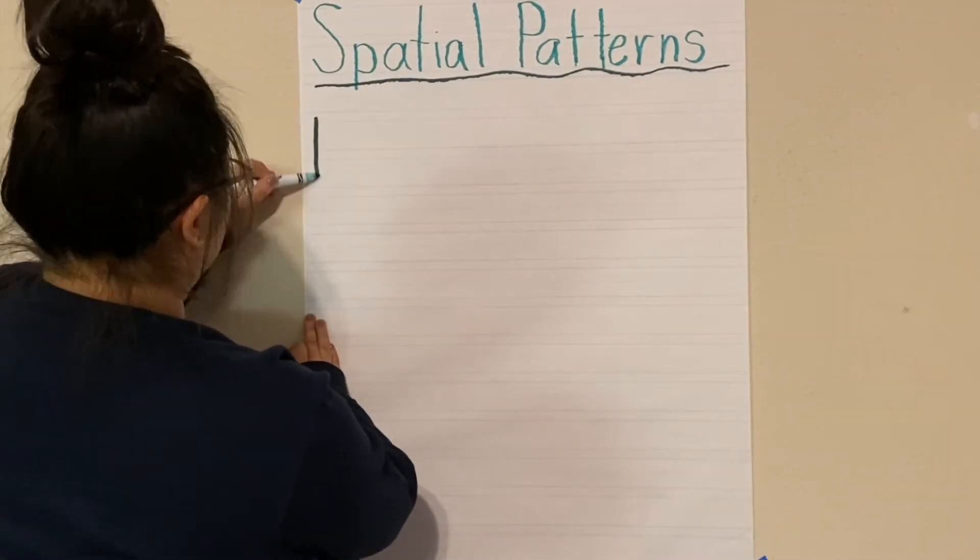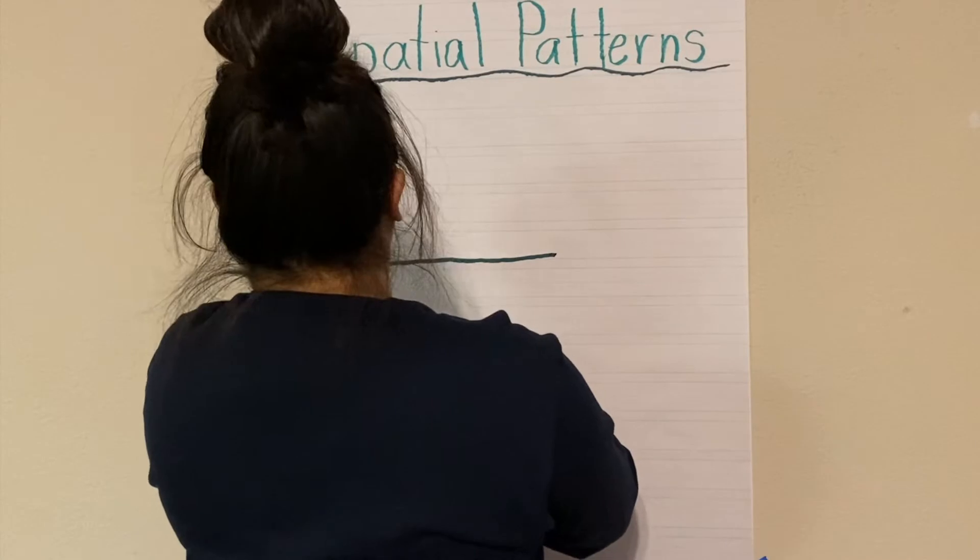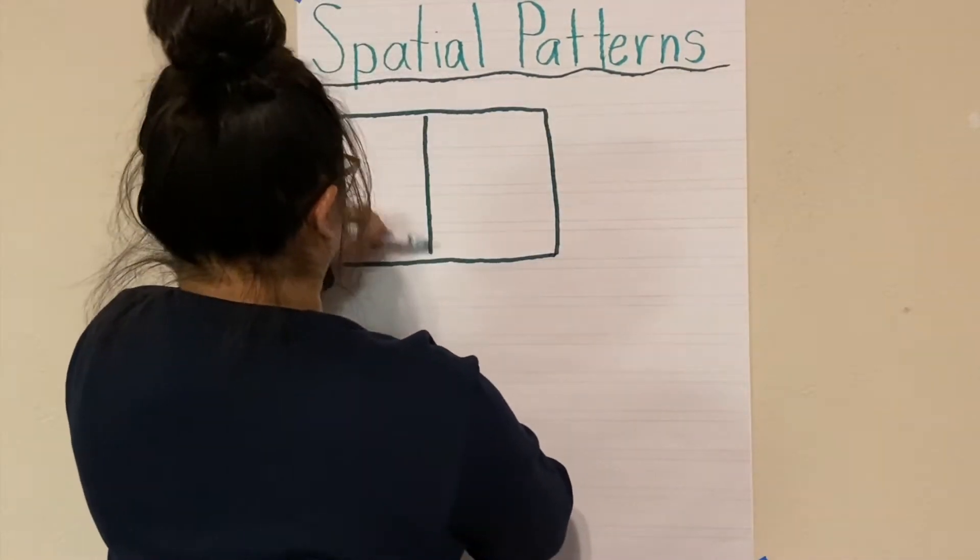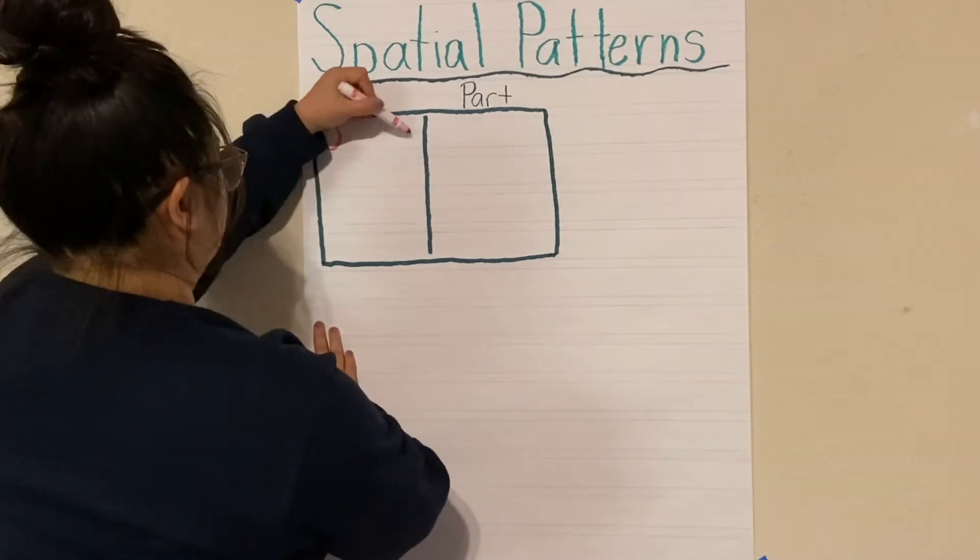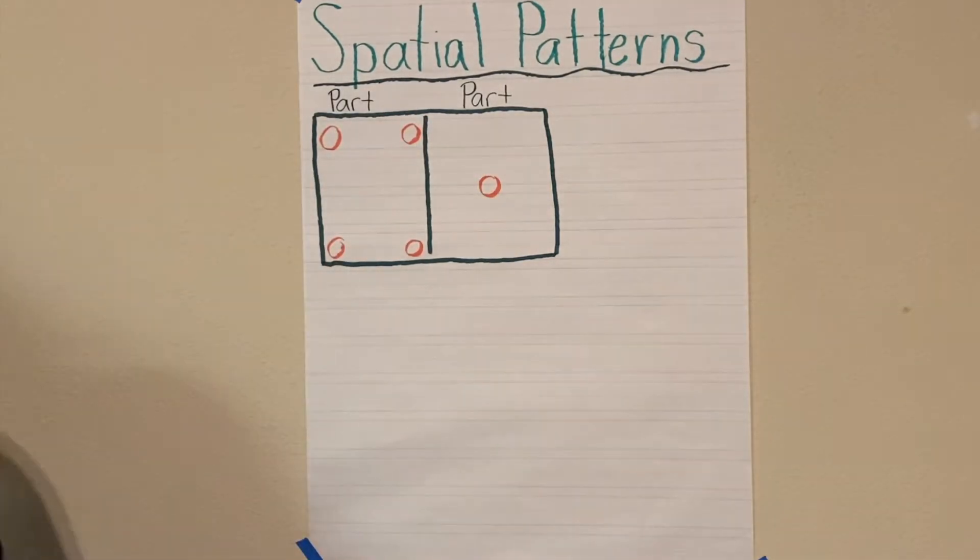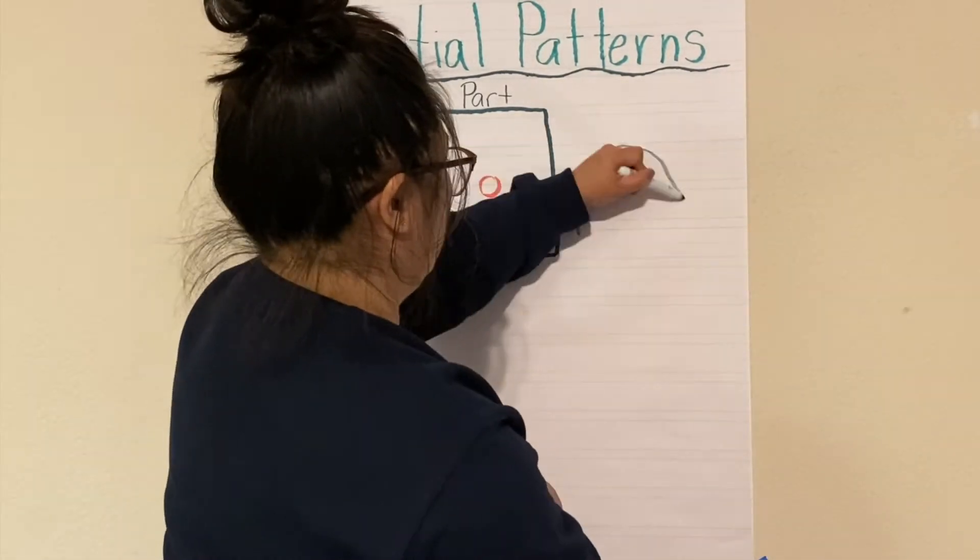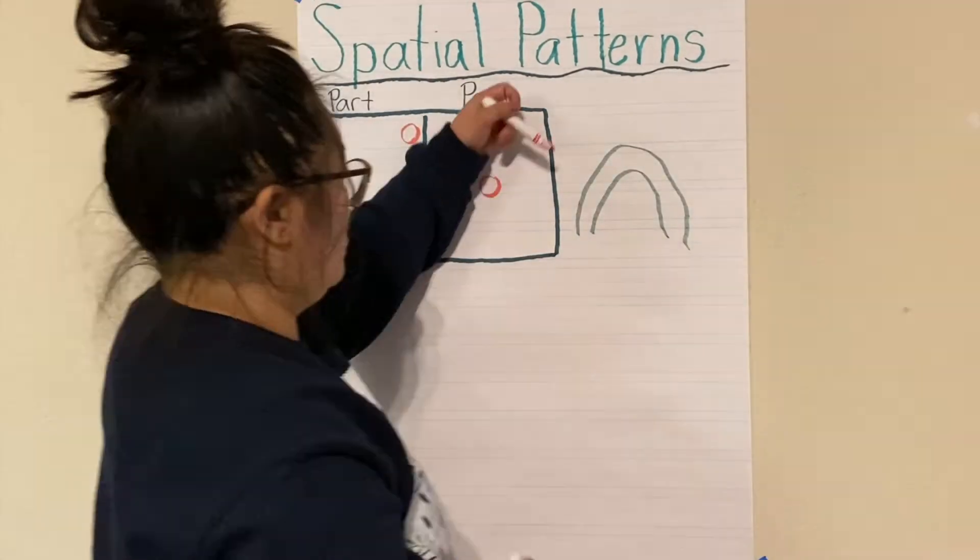Today when I demonstrate these spatial patterns I'm going to use the number five. The first spatial pattern that I'm making is with a part-part-whole chart and I'm making four red counters on one side and one counter on the other side.